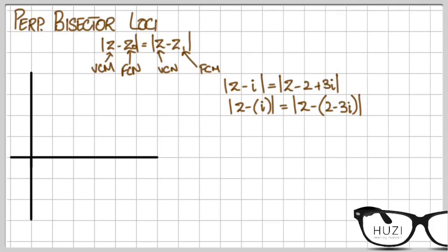So i would be somewhere here, this is i, and 2 minus 3i, so 2 on the real axis and minus 3i. This point is minus 3i.